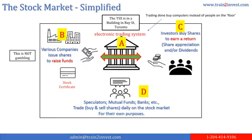The stock market, simplified. The TSX is in a building at Bay Street in Toronto — letter A on the chart. It has an electronic trading system; that is, trades are completed via computers. It is not a people's system as you see on TV like the New York Stock Exchange. Letter B shows that various companies issue shares to raise funds — for various reasons such as expansion — and will issue stock certificates in return for cash. Letter C shows the investors who buy the shares issued by companies, to earn a higher return than what banks provide in fixed deposit returns or GICs. Their return can be in the form of share appreciation, dividends, or both.